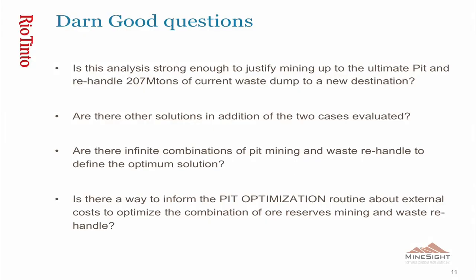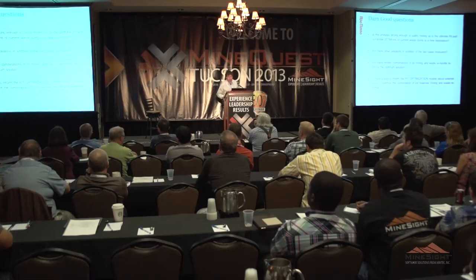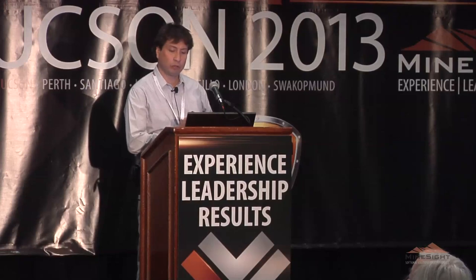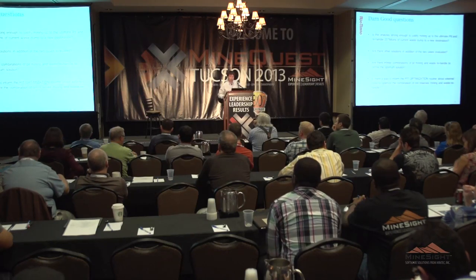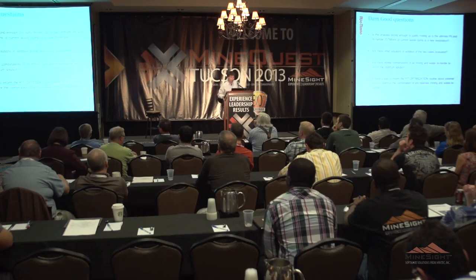Questions will arise in a technical review. Is this analysis strong enough to support the decision? Are there more combinations or solutions for this exercise? The real question: is there a way to inform the pit optimization routines about the external costs to optimize the combination of all reserves mining and waste re-handle? We think the previous analysis cannot support the case in a Rio Tinto technical review. Current pit optimization procedures don't allow the LG routine or any optimization routine to include external costs in the calculation.